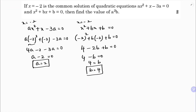Now a is 2 and b is 4. We need to find a squared times b. So a squared times b equals 2 squared times 4, which is 4 times 4, which equals 16. Therefore, a squared b equals 16.